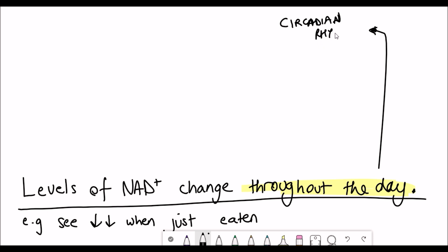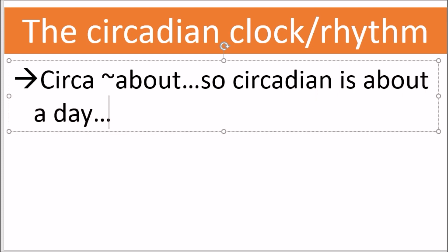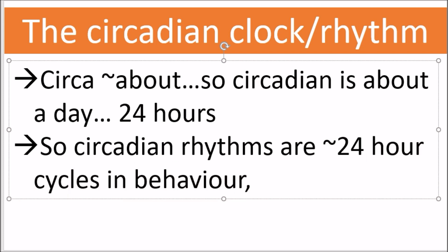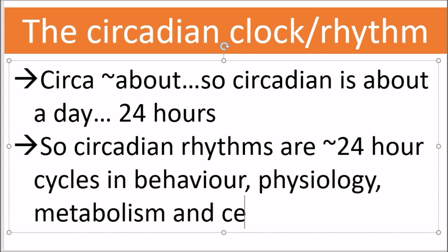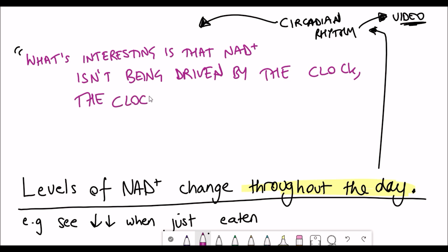And just to add to the complexity, we also know that NAD plus is important for driving the circadian rhythm. So the circadian rhythm is the rhythm that goes on in our cells that's around 24 hours, and that regulates rhythms in behaviour, physiology, metabolism, and selectivity. And I have an entire video on that that I'll link that you should check out. But we also know that NAD plus drives the circadian rhythm. And as this quote from David Sinclair says, it's interesting that NAD plus isn't being driven by the clock, the clock is driven by NAD plus.